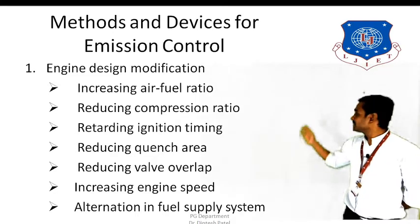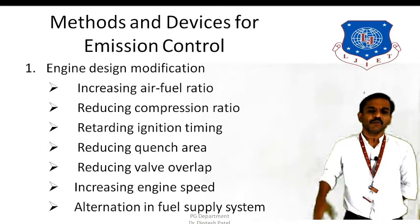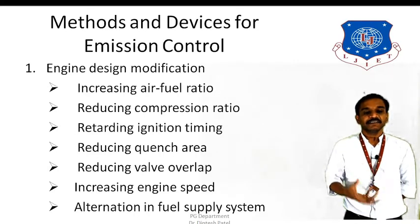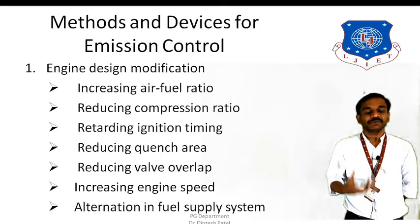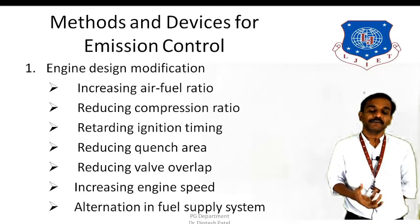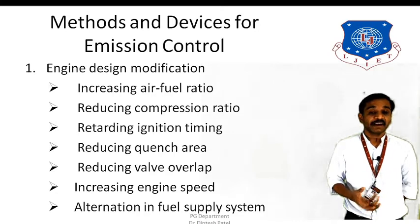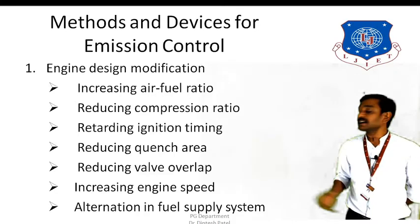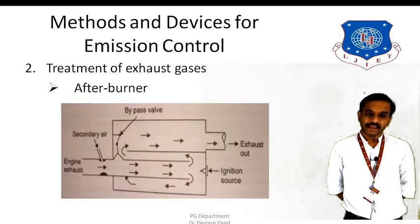The next one is by alteration in the fuel supply system. A few modern fuel supply systems have been adopted by the industry, and these reduce the overall emissions into the atmosphere — such as multipoint fuel injection system as compared to or over the conventional carburation system. So these are the methods to reduce emission control from the engine.